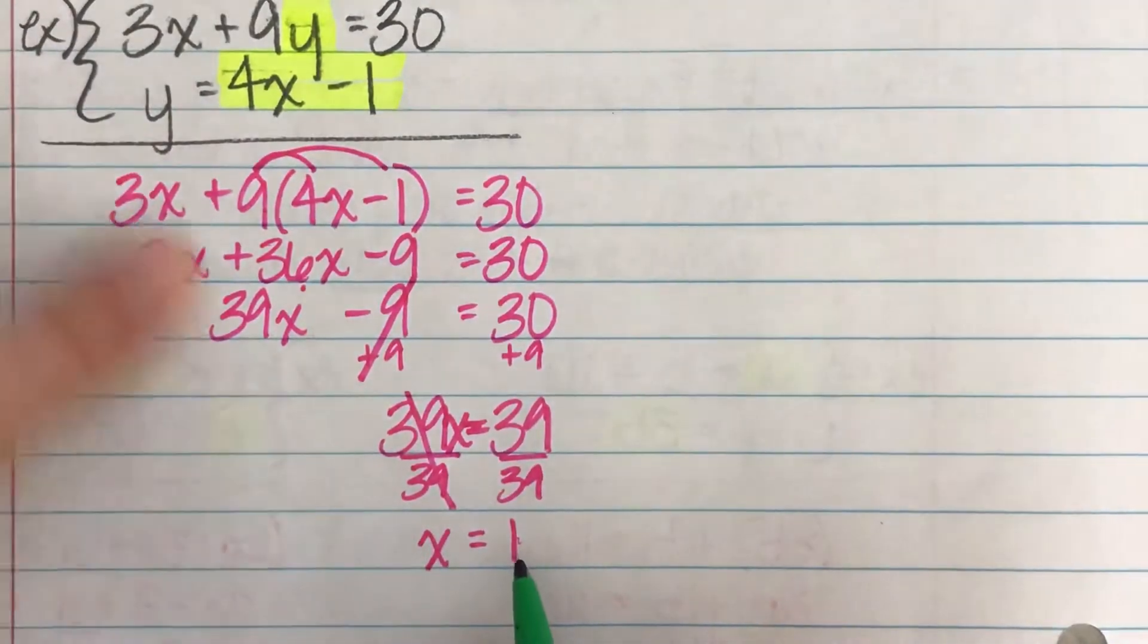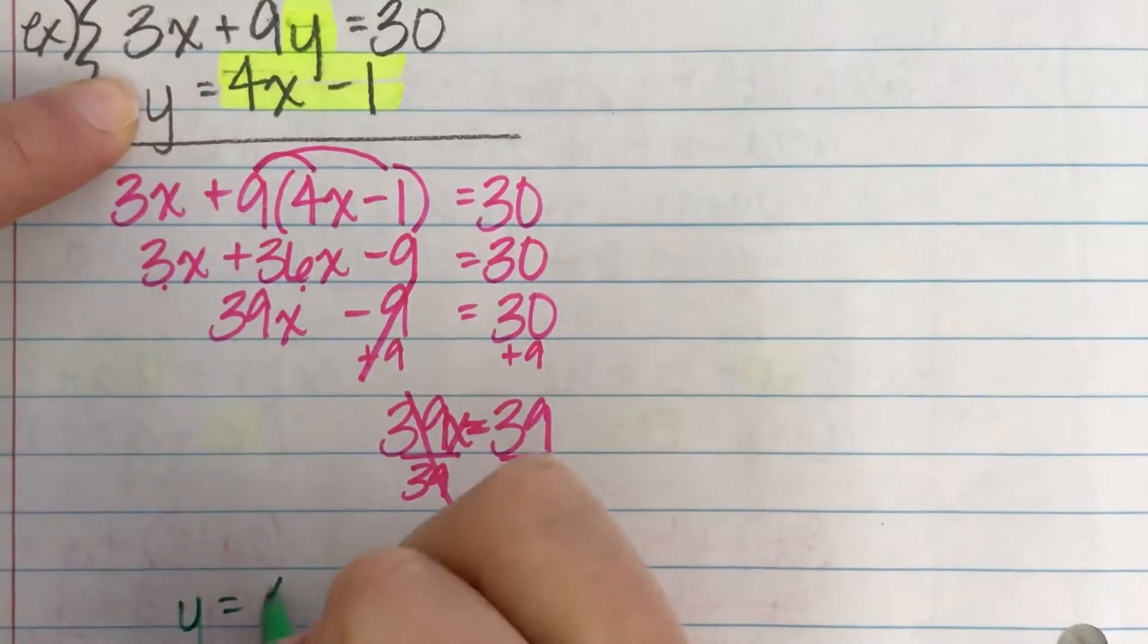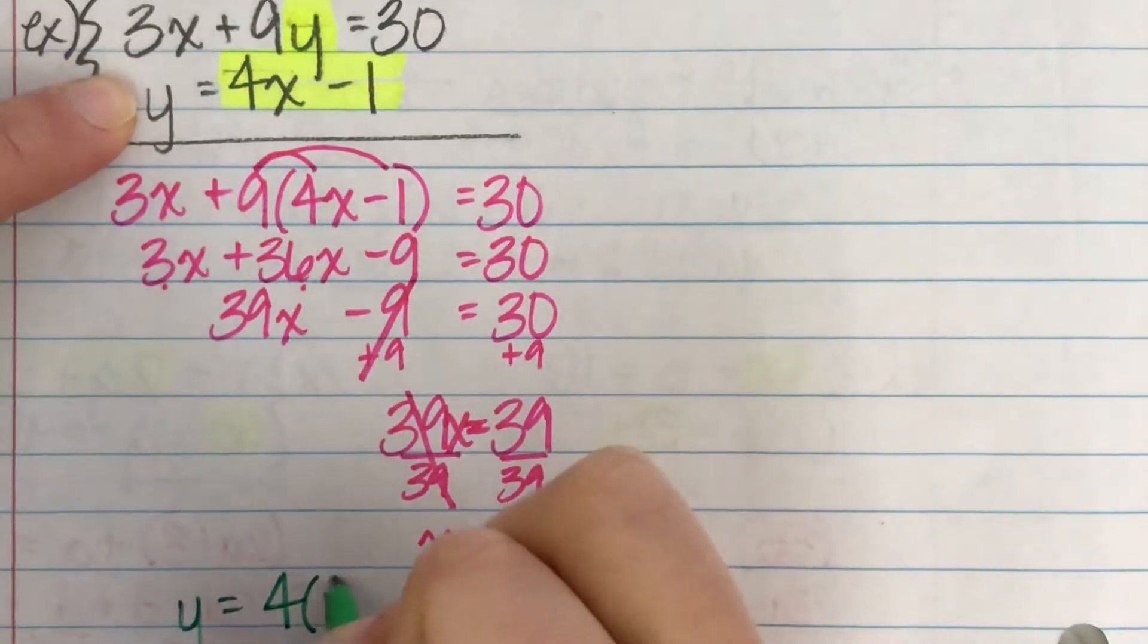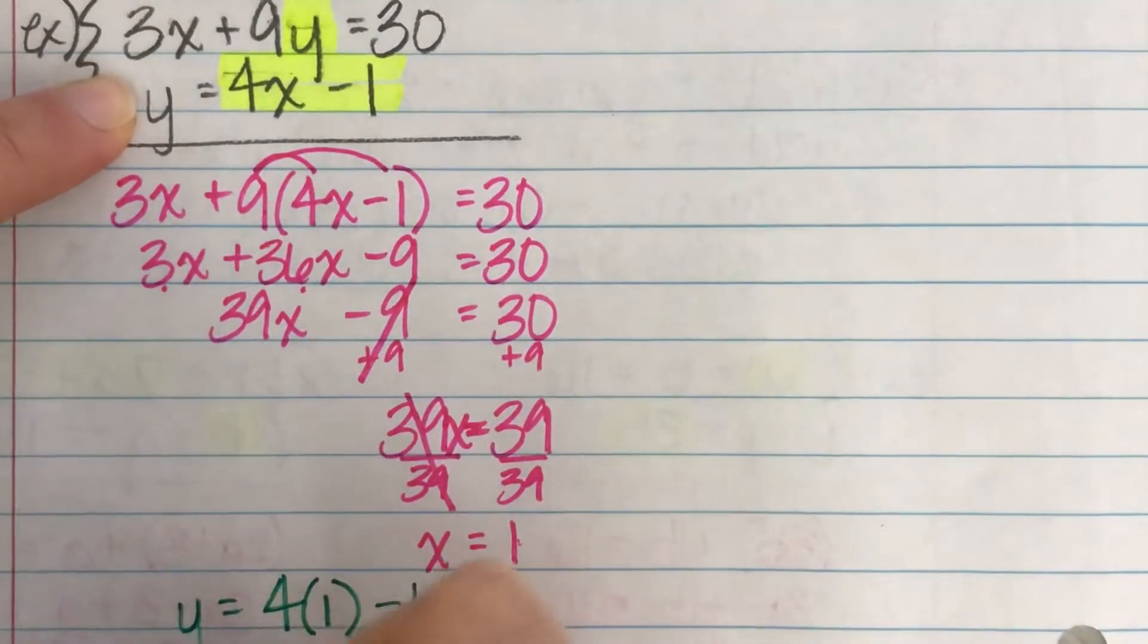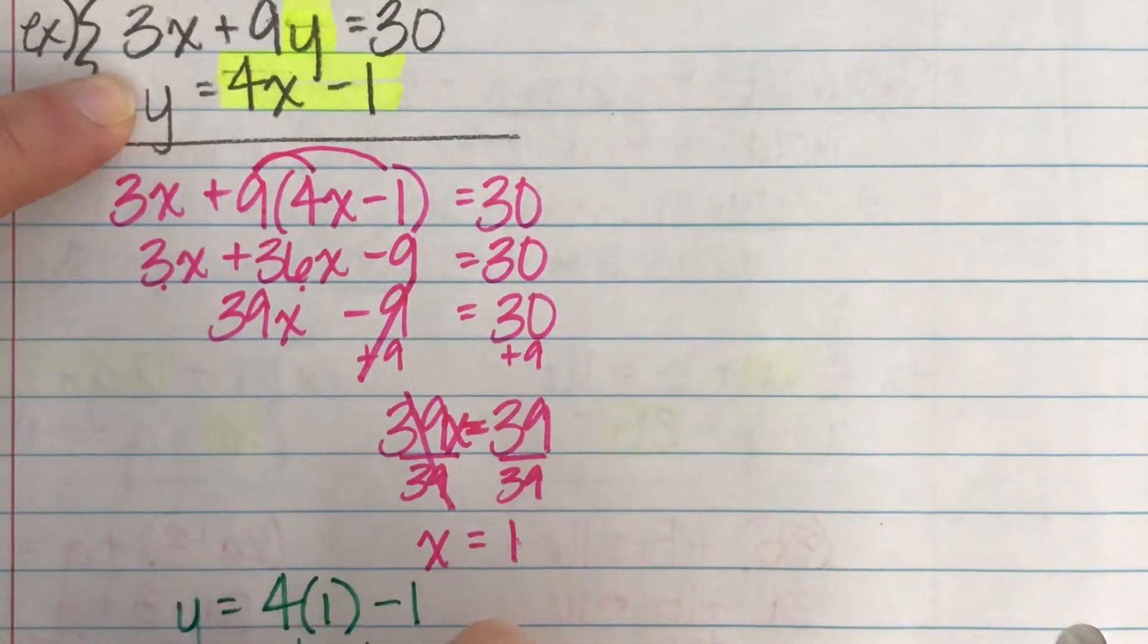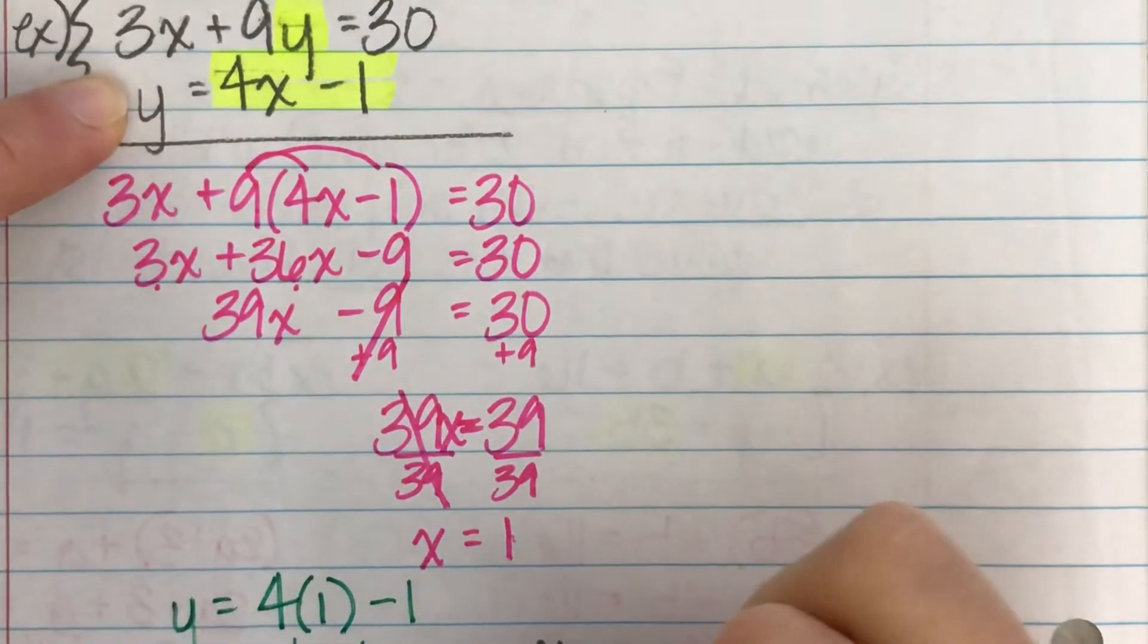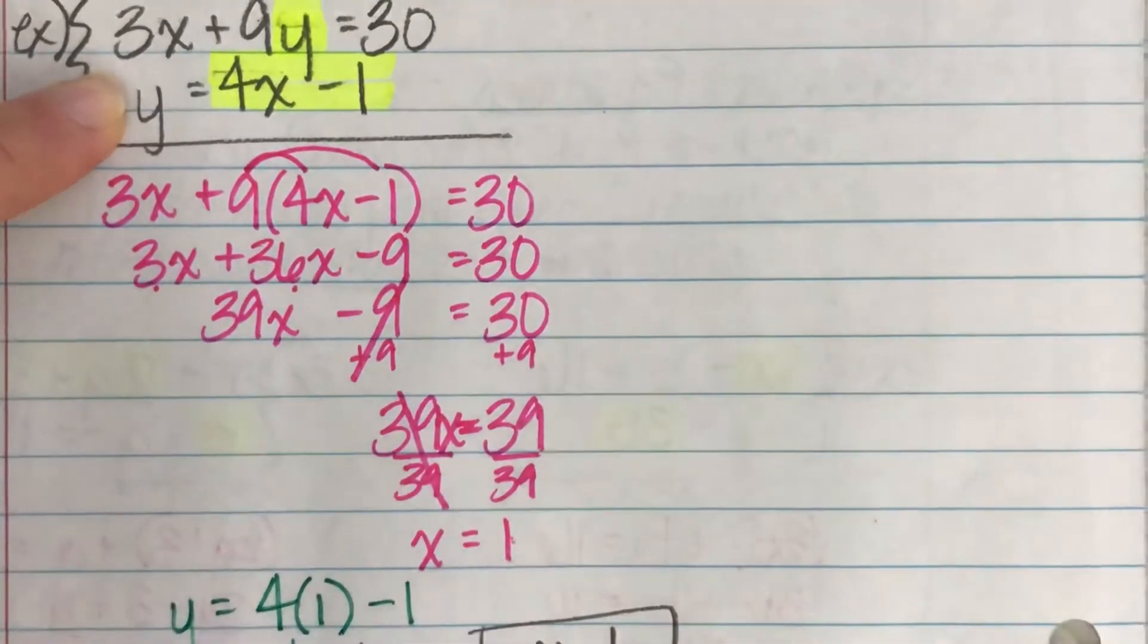Halfway there. I know now that x is one. Well, now that I know x is one, I'm going to go up to the y formula and I'm going to say, well, y equals four times x. But now I know that x is actually worth one minus one. So y equals four times one is four minus one. So y equals four times one equals three. So my answer, two part answer, x equals one, y equals three.